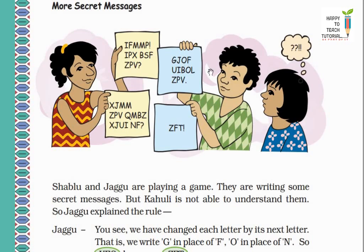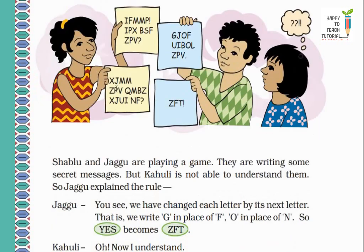Now we decode Jaggu's answer. So what did Jaggu say? In place of G what comes? F comes. In place of J, I. In place of O, N comes. In place of F, E comes. So the meaning is 'Fine'. F-I-N-E, fine. Then in place of U what comes? T. In place of I, H. In place of B, A. In place of O, N. And in place of L, K. So what is this? Thank. And in place of Z, Y. In place of P, O. And in place of V, U. Same here. So what is this? 'Fine, thank you.'